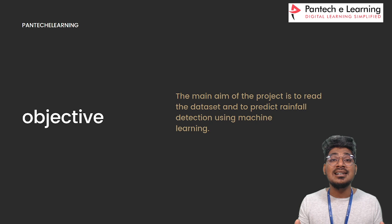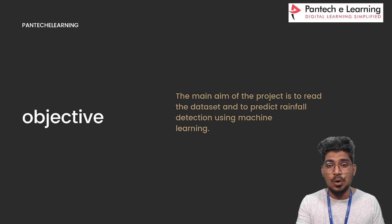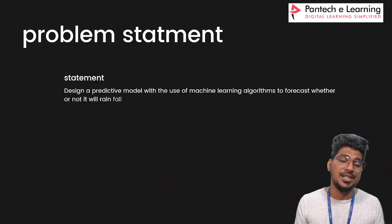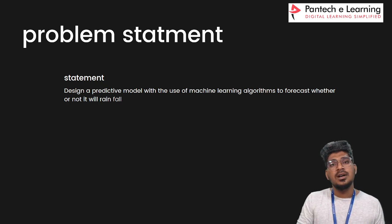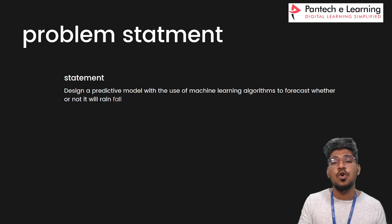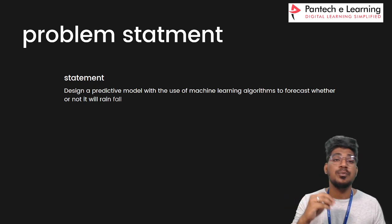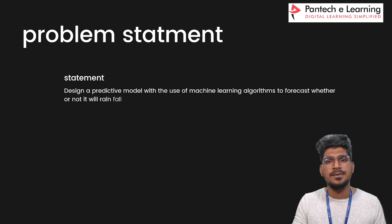This is not a regular class, so please interact with me. Now, what is the problem statement? The problem statement here is to design a predictive model using a machine learning algorithm to forecast whether the rain will fall or not.